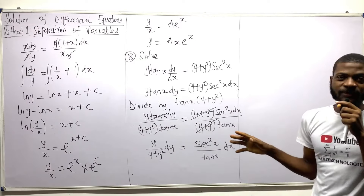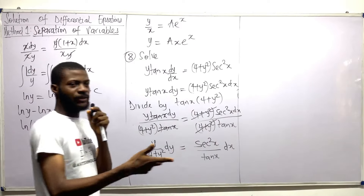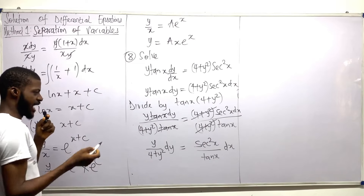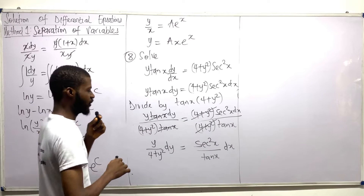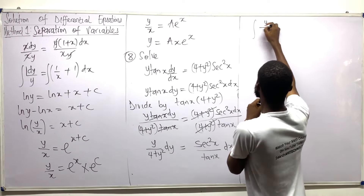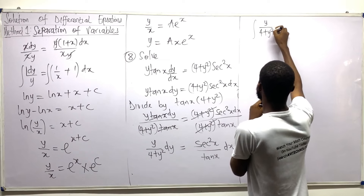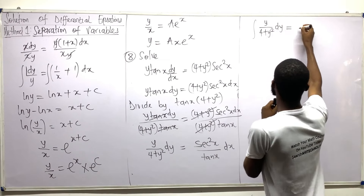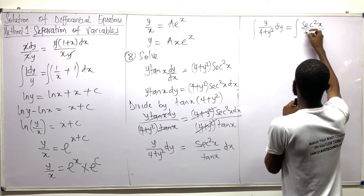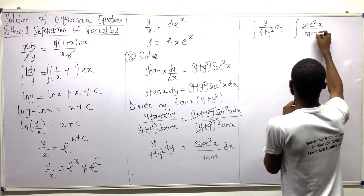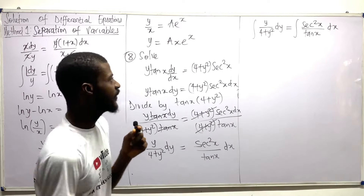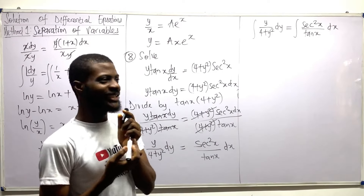Now looking at the way this expression is, we have to now integrate both sides. So let us integrate both sides of this expression. I'm going to have the integral of y divided by 4 plus y squared dy equal the integral of sec squared x divided by tan x dx.